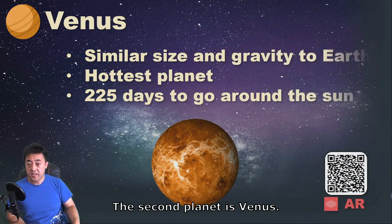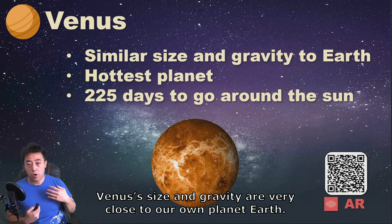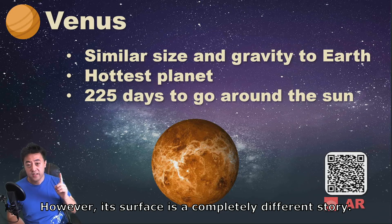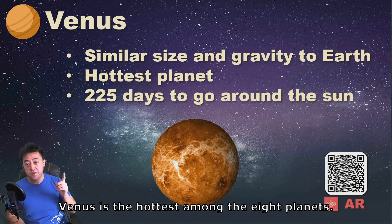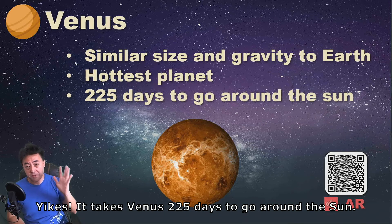The second planet is Venus. Venus's size and gravity are very close to our own planet Earth. Some people even call Venus the Earth's sister planet. However, its surface is a completely different story. Venus is the hottest among the eight planets — yikes! It takes Venus 225 days to go around the sun.